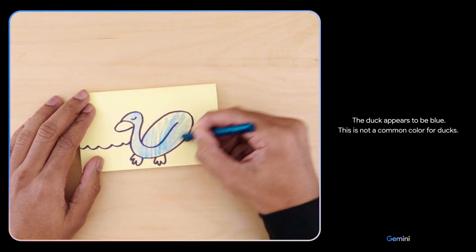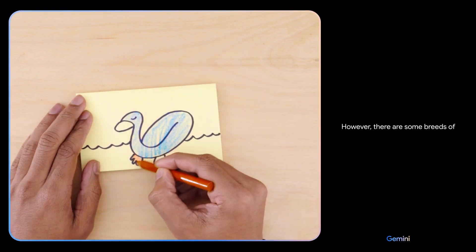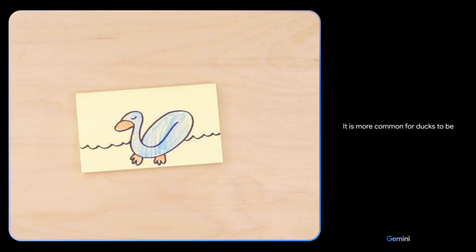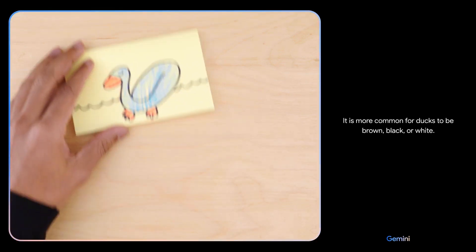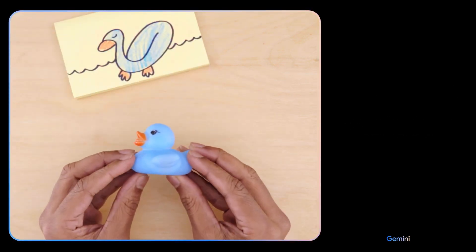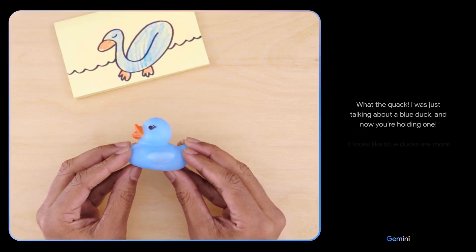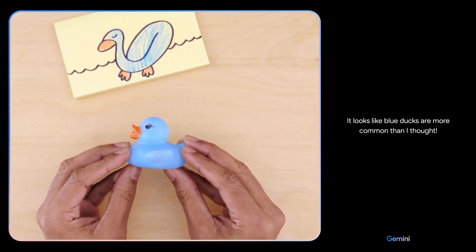The duck appears to be blue. This is not a common color for ducks. However, there are some breeds of blue ducks. These are typically not as common as other duck breeds. It is more common for ducks to be brown, black, or white. Are you sure? What the quack? I was just talking about a blue duck and now you're holding one. It looks like blue ducks are more common than I thought.